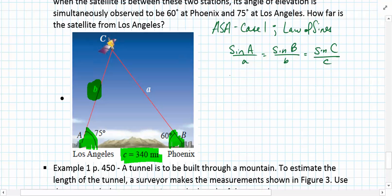Filling in the known data: we have sine of 75 degrees over a which is unknown, sine of 60 degrees over b which is unknown but that's the one we're looking for, which equals sine of angle C divided by length 340 miles.